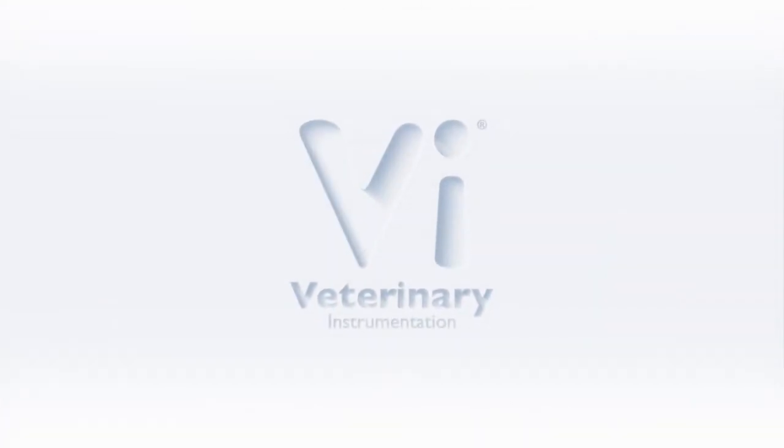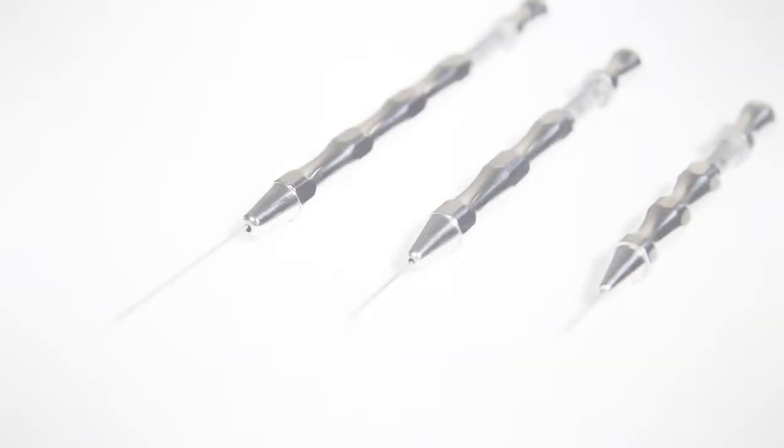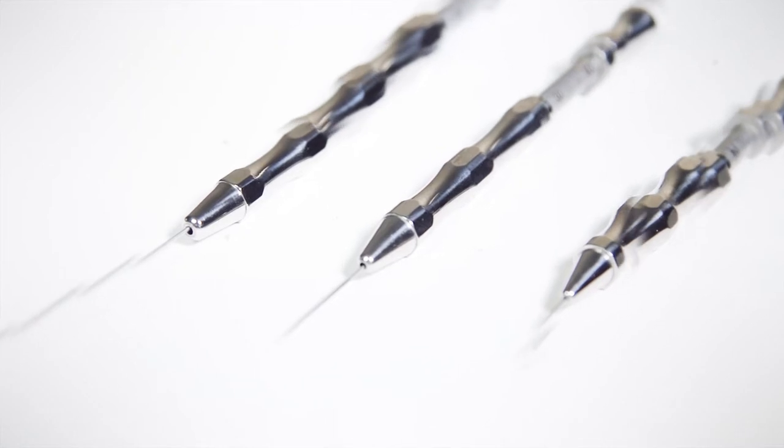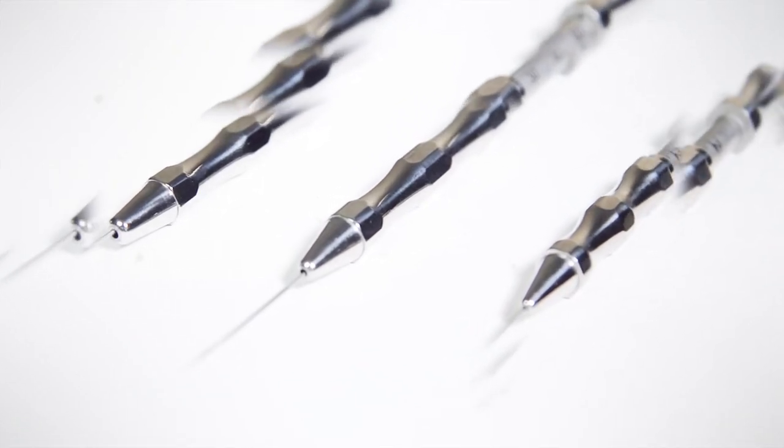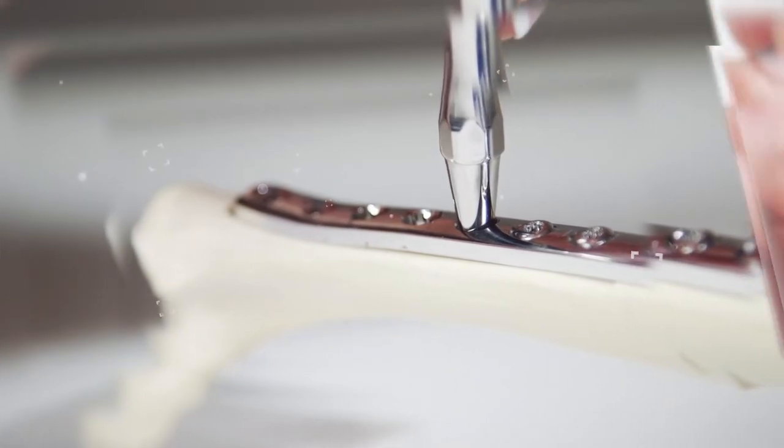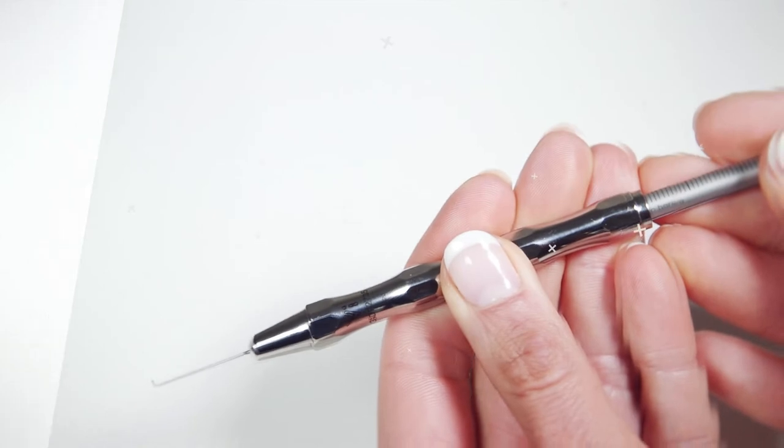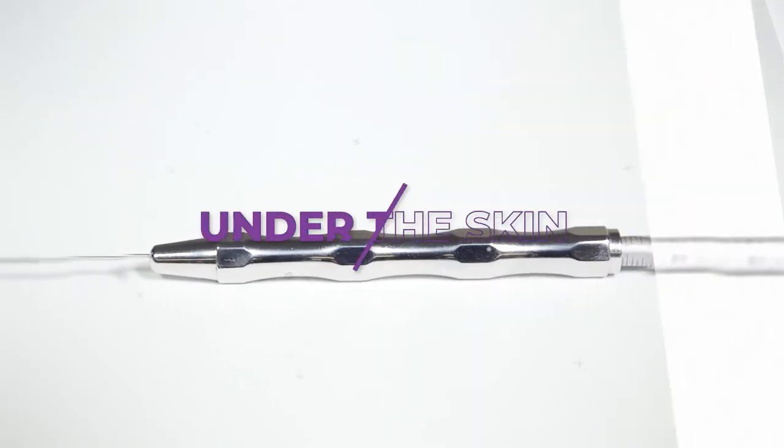Hello and welcome to Veterinary Instrumentation's latest episode of Under the Skin, a videography series introducing key devices used during orthopaedic surgery. In this episode, we will be focusing on a staple device for orthopaedic surgery, the depth gauge. So, let's go under the skin.